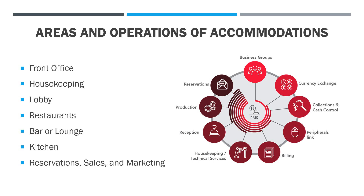Another area of the hotel is the lobby. The lobby is a place where the guests can stay while they are waiting to be accommodated, waiting for their guests, or just staying there for relaxation. Another area is the restaurant, which provides food and beverage services. The bar or lounge is a place that provides beverage service and where guests can be entertained. The kitchen is, of course, where we cook the food that we provide to our guests.